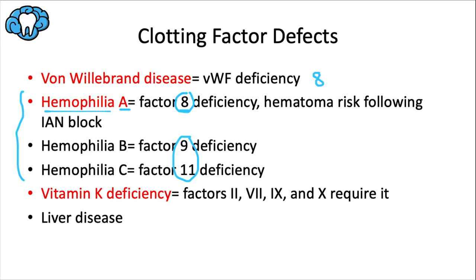For acquired coagulation disorders, vitamin K deficiency is the most common. Factors 2, 7, 9, and 10 are made in the liver and require vitamin K for synthesis, so they are specifically impacted if vitamin K is low. Liver dysfunction, like severe liver disease, can also lead to deficiencies in these same vitamin K-dependent coagulation factors 2, 7, 9, and 10. These factors may be listed in either number or Roman numeral form on the board exam.